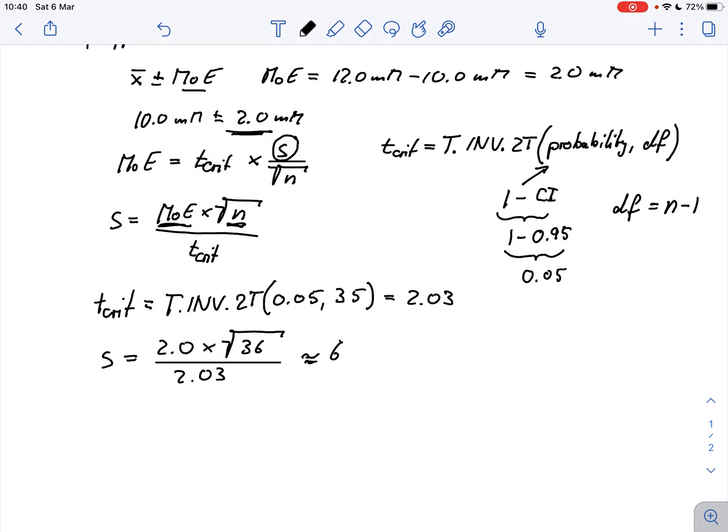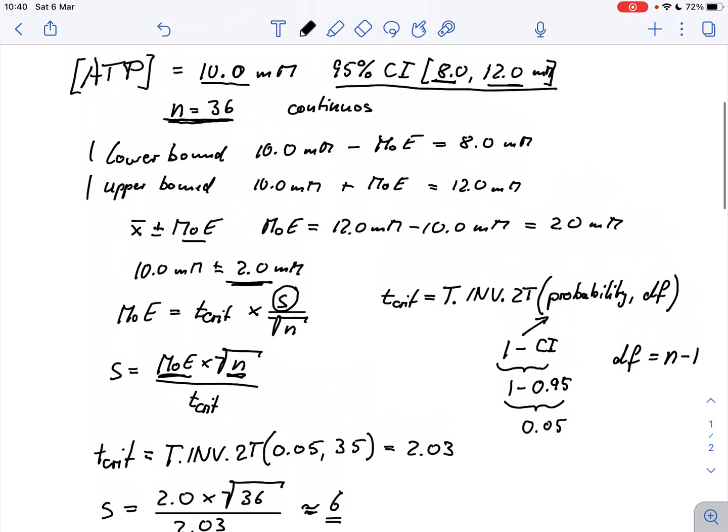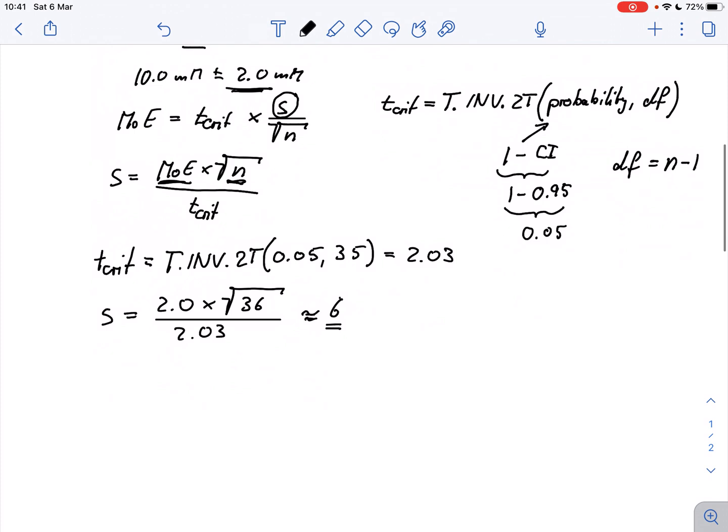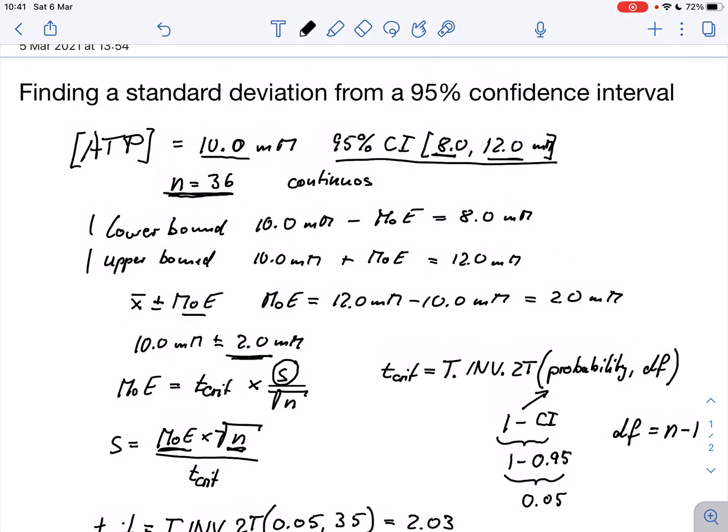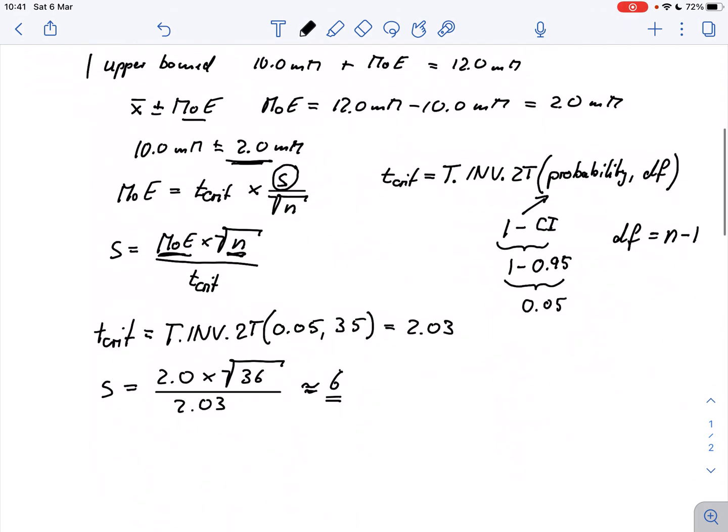I think it is 5.95 or something like that but I just rounded up to a standard deviation of 6. And that is basically how we can calculate the standard deviation from a 95% confidence interval. I hope this makes sense and thank you very much for watching.